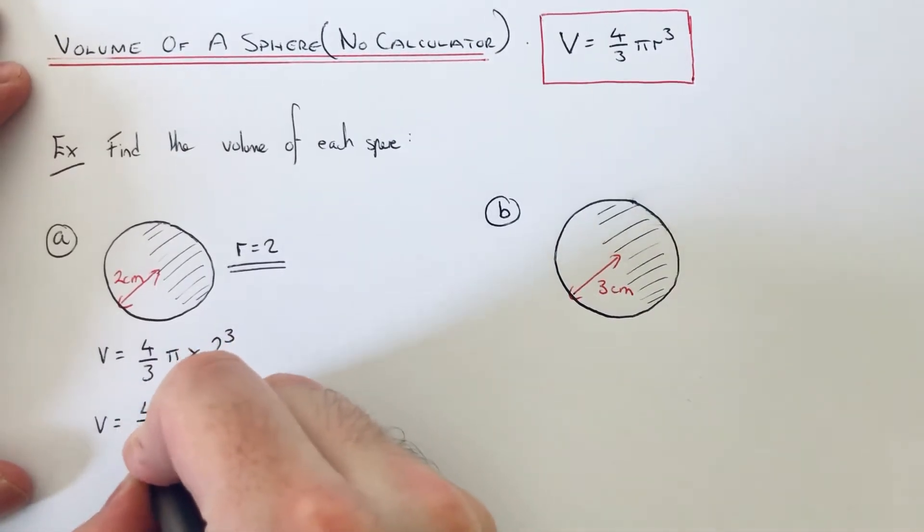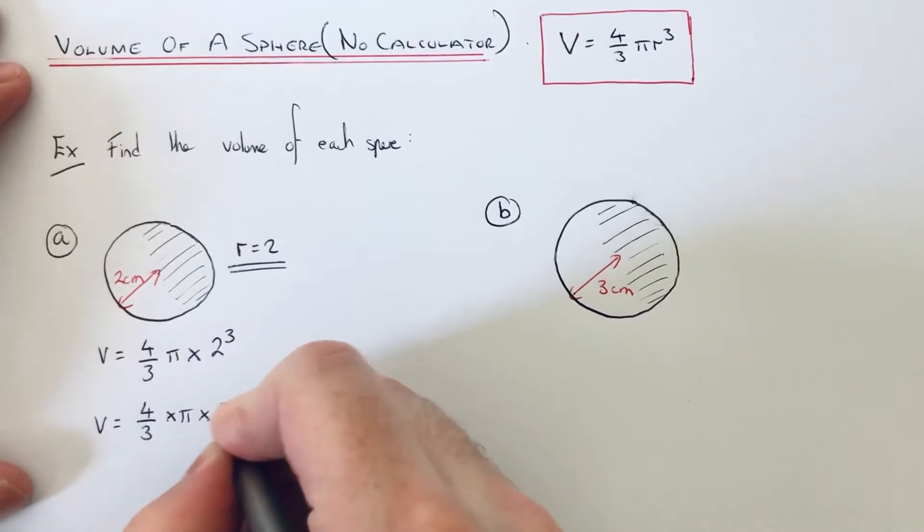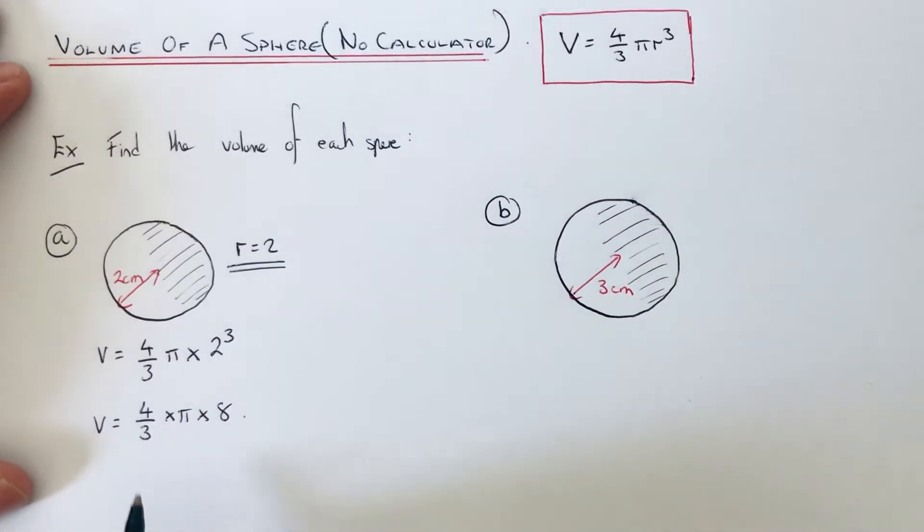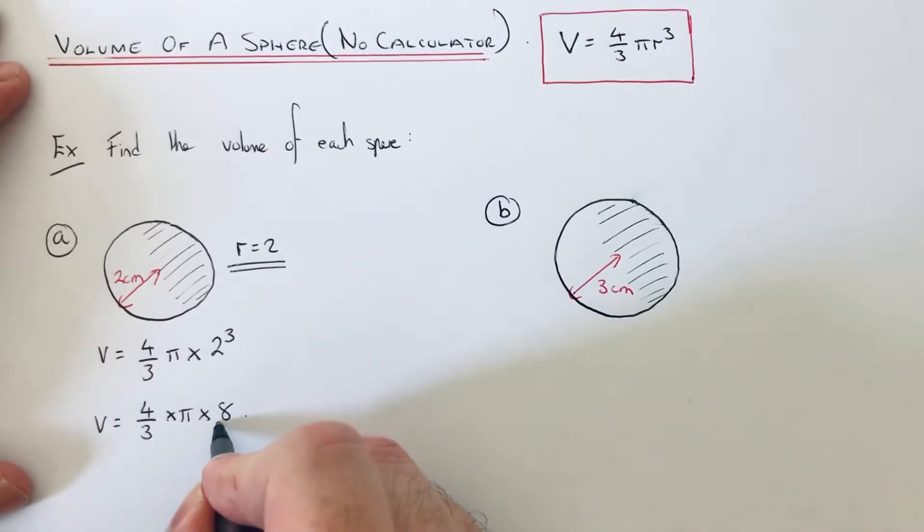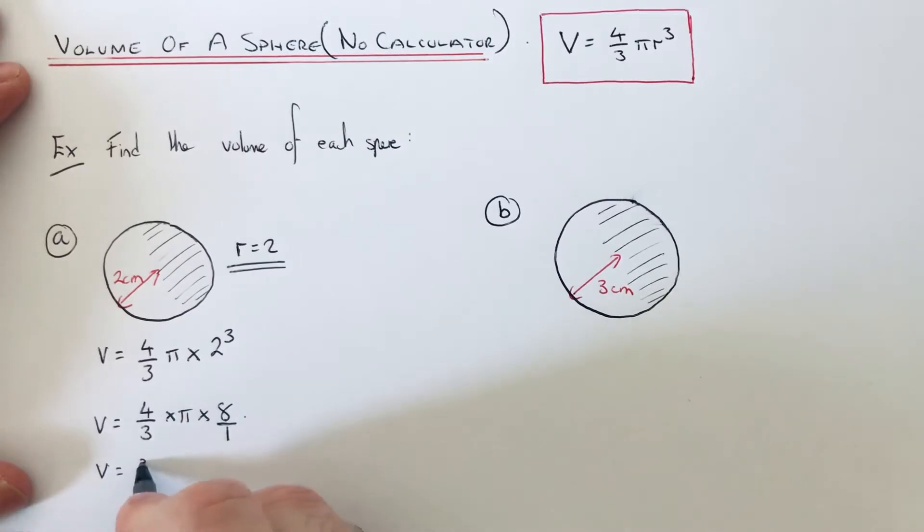In the next line we'll have 4/3 × π × 8. The next thing we can do is multiply our fraction by this whole number. You can do this by making the whole number have a denominator of 1. On the top of our fraction we've got 4 × 8, which is 32.